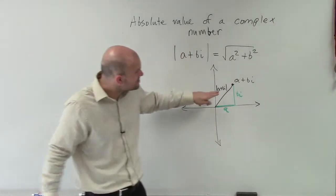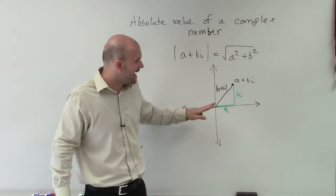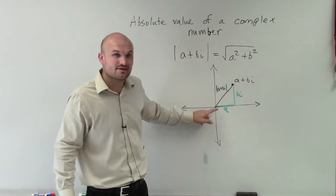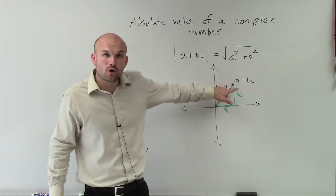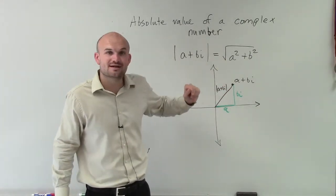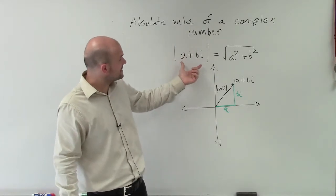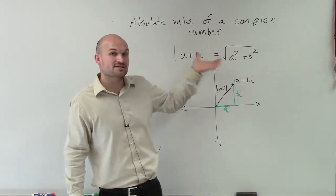Therefore, you can determine that the absolute value of a plus bi is going to be the distance from your origin to your point of your complex number. That's how we determine what the absolute value of a complex number is.